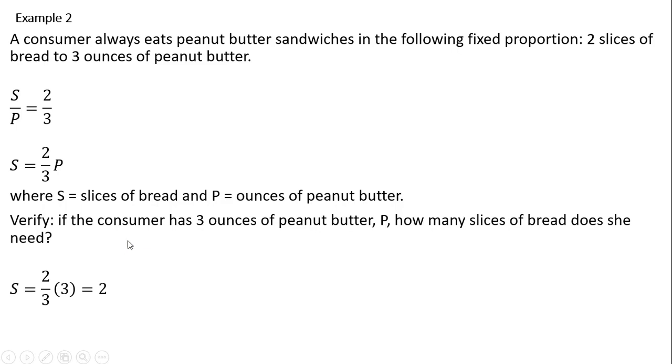So now constructing our utility function. This perfect complement utility function will take on this form here. We're going to have S comma two-thirds P.